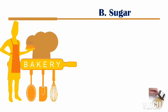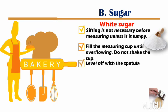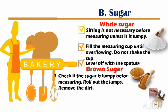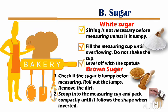The next ingredient is sugar. We have two kinds: white sugar and brown sugar. For white sugar: sifting is not necessary before measuring unless it is lumpy. Fill the measuring cup until overflowing — do not shake the cup. Then level up with the spatula. For brown sugar: check if the sugar is lumpy before measuring, roll out the lumps and remove dirt. Then scoop into the measuring cup and pack compactly until it follows the shape when inverted.